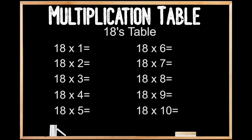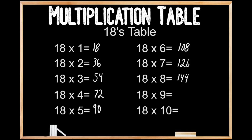18's table. 18 times 1 is 18. 18 times 2 is 36. 18 times 3 is 54. 18 times 4 is 72. 18 times 5 is 90. 18 times 6 is 108. 18 times 7 is 126. 18 times 8 is 144. 18 times 9 is 162. And 18 times 10 is 180.